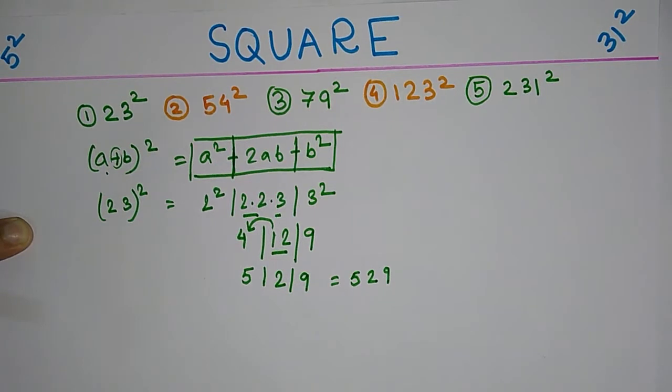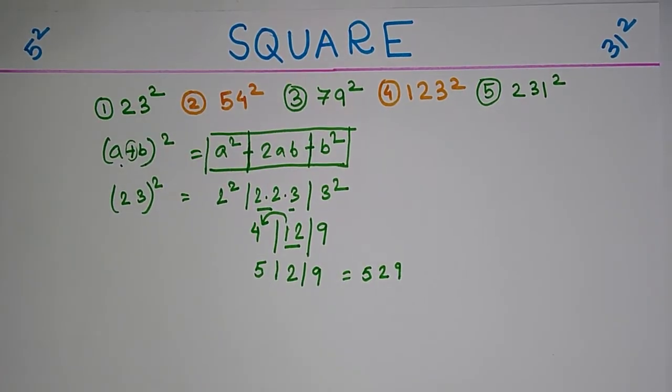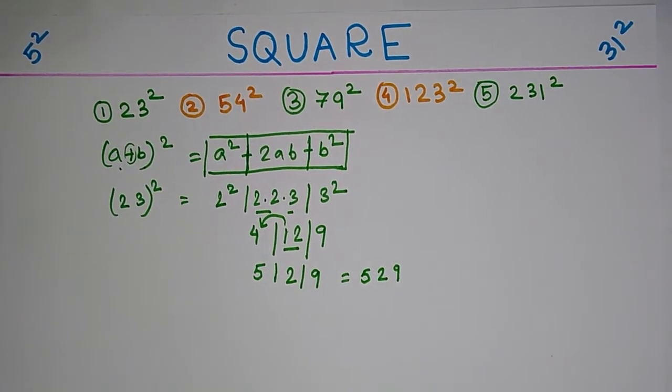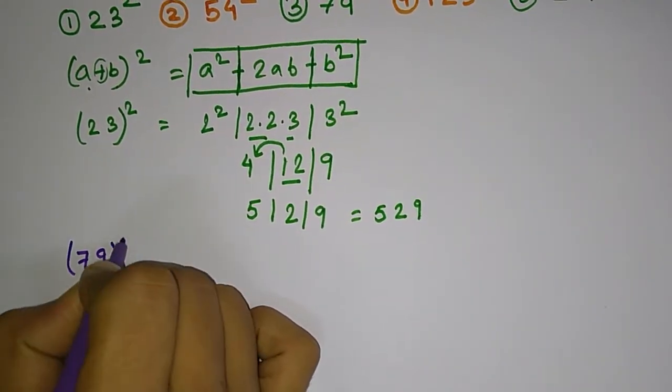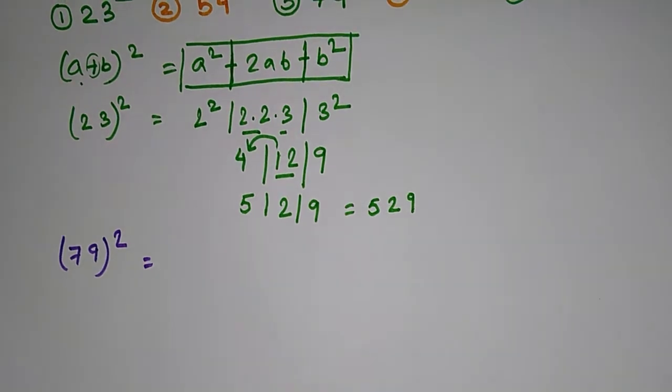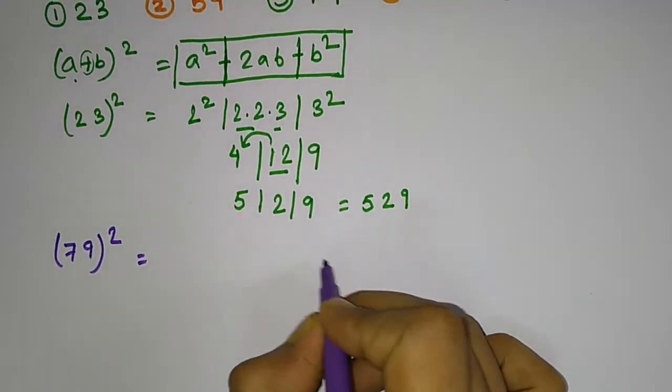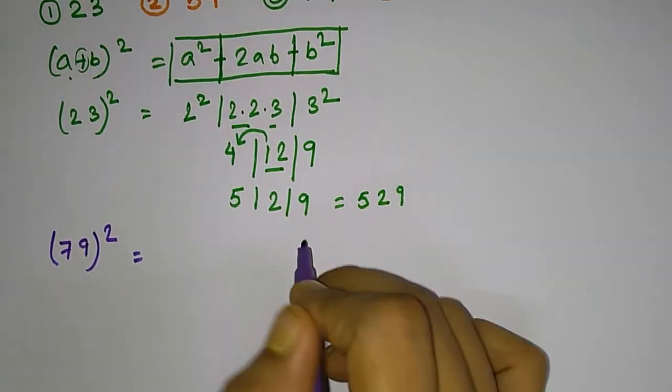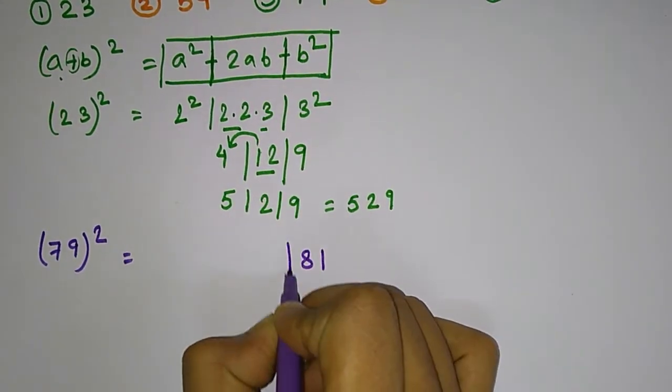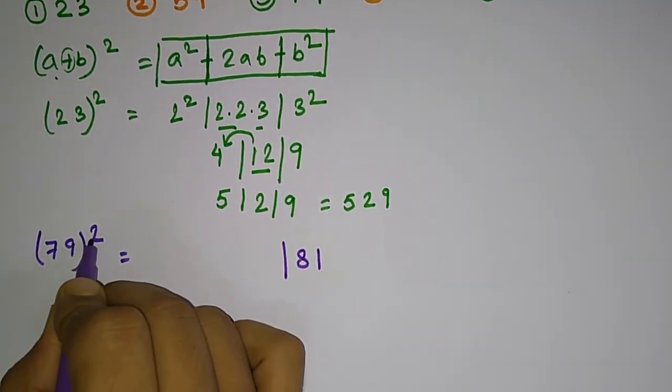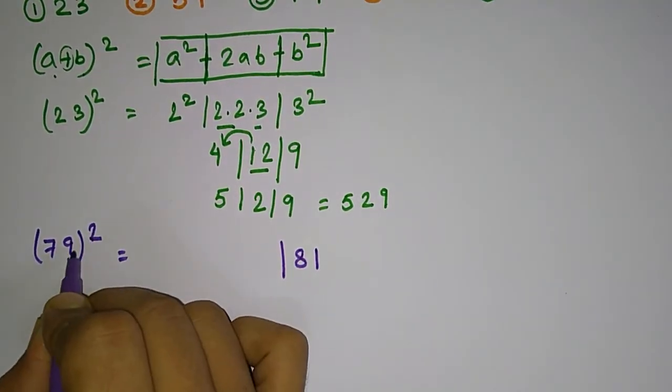I will show you one more example so that you can understand it better. Let's take 79. Now one more hint I will give you: start your calculation from the right hand side, okay. Say 9 square is 81.